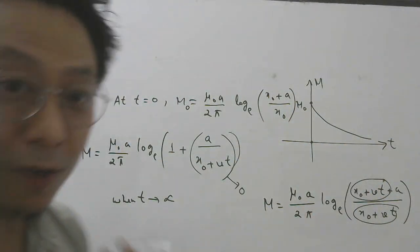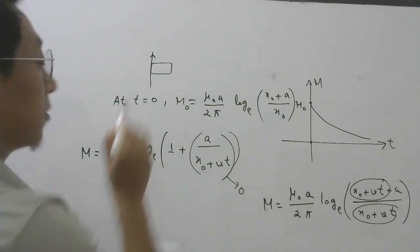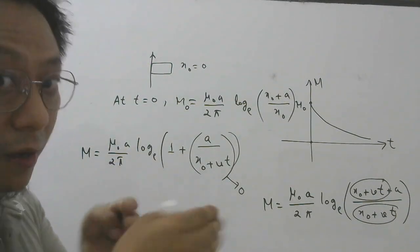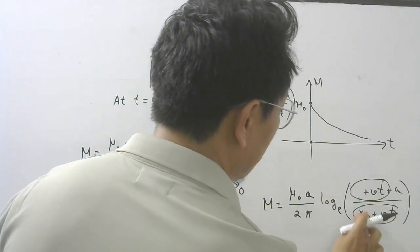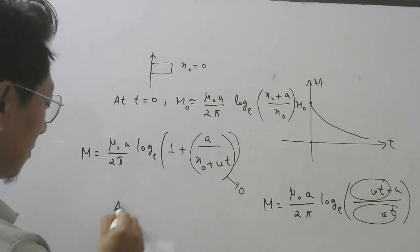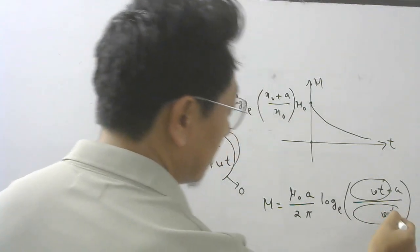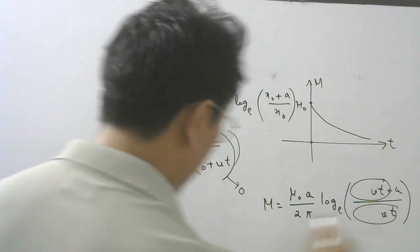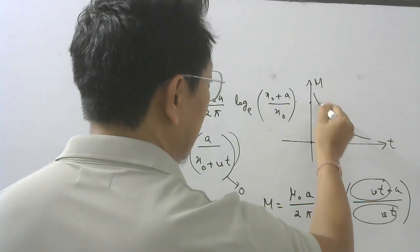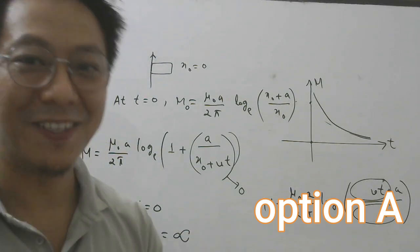This graph does not match any of the options given. However, if you assume that at t = 0 the coil started right at the wire, meaning X₀ = 0, then at t = 0, M = μ₀A / 2π · ln[A/0], which goes to infinity. So M would start from infinity. This ambiguity arises because the initial position was not mentioned in the question. Let us see what the board does. Thank you.